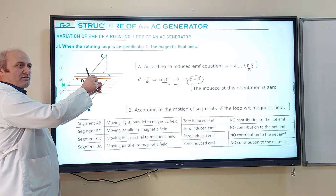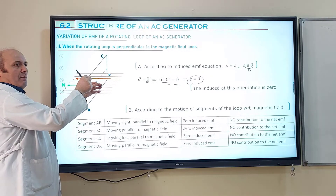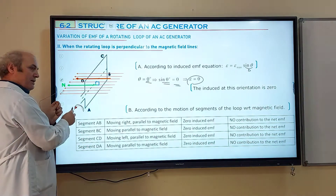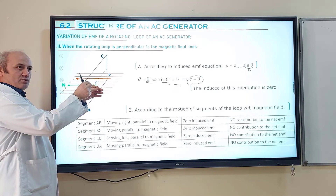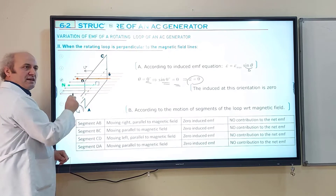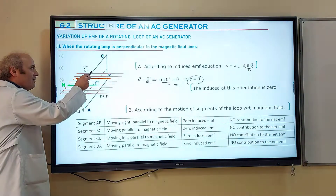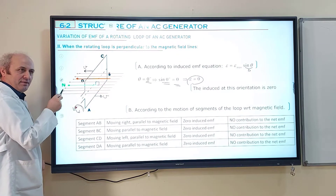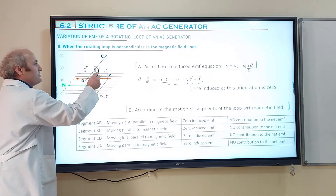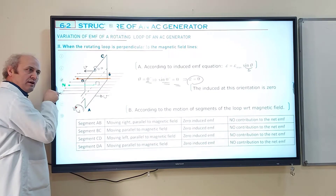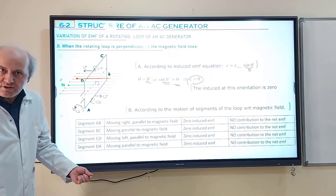When the loop continues rotating counterclockwise, the upper segment is moving to the left and the lower segment is moving to the right. The velocity of these segments is parallel to the magnetic field. If velocity is parallel to the magnetic field, the induced EMF is zero — no crossing of field lines. The other two segments — BC and AD — are always zero because they never cross the magnetic field lines.